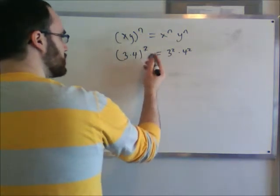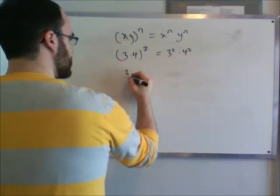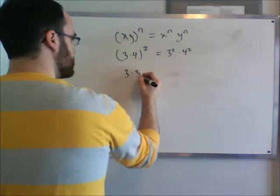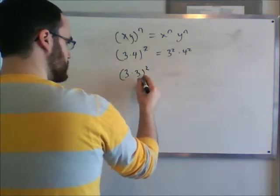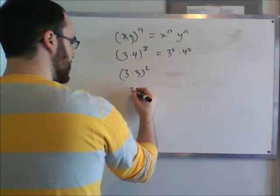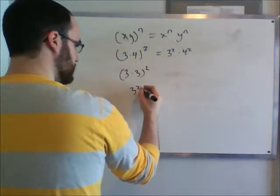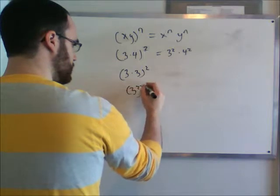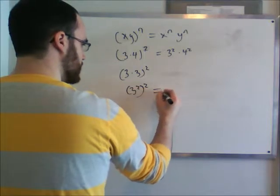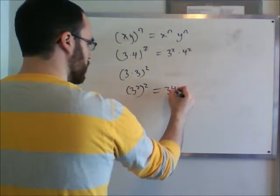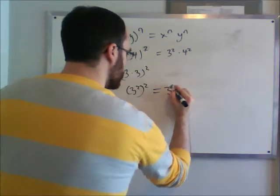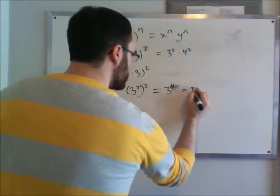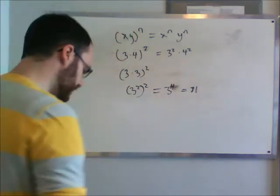If we had 3 times 3 squared, this 3 times 3 is actually 3 squared, all squared, which equals 3 to the 4th — which we just said was 81.